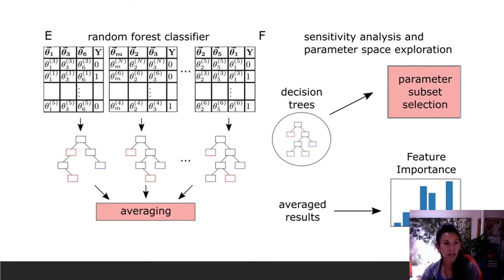Once we have that data matrix, we train a random forest classifier with bootstrapping. Then we look at different results depending on what information we want to get from that random forest classifier. We would obtain feature permutation importance from the average results, and we could use that as a parameter sensitivity measure. Then we could look at individual decision trees to obtain parameter subsets for parameter space exploration.